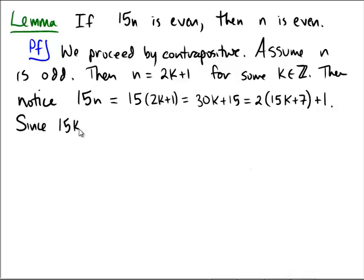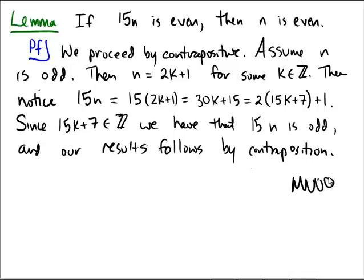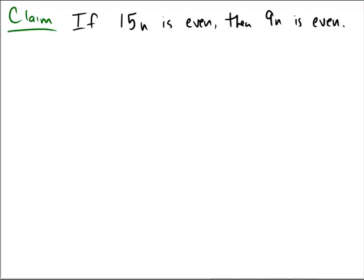Since 15k plus 7 is an integer, we have that 15n is odd. And, our result follows by contrapositive. So, our lemma is true, and now we have established it as true. So, hopefully your proof looked very similar. Now, remember that wasn't actually the original claim. So, pause the video yet again and see if you can now prove the claim using our lemma.